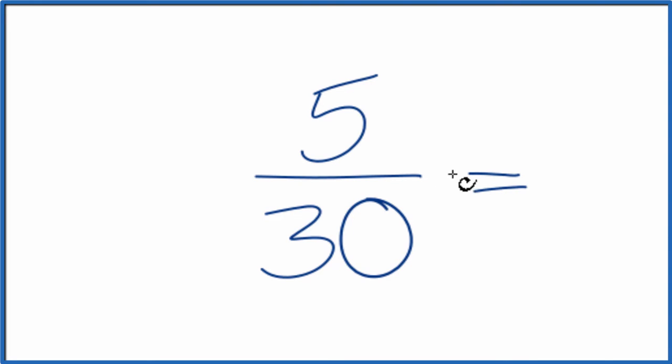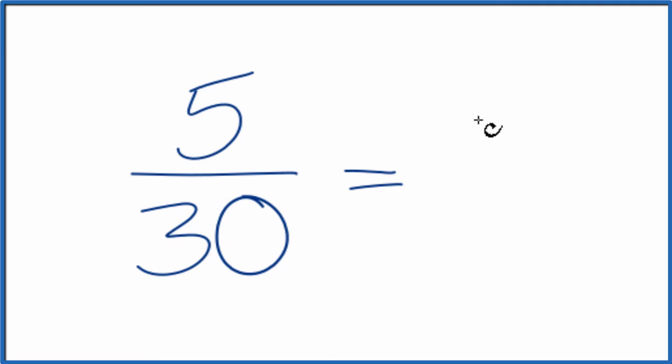So let's take the numerator, 5, and divide that by 5. 5 divided by 5 is 1. Then the denominator, 30, we'll divide that by 5. 30 divided by 5, that's 6.